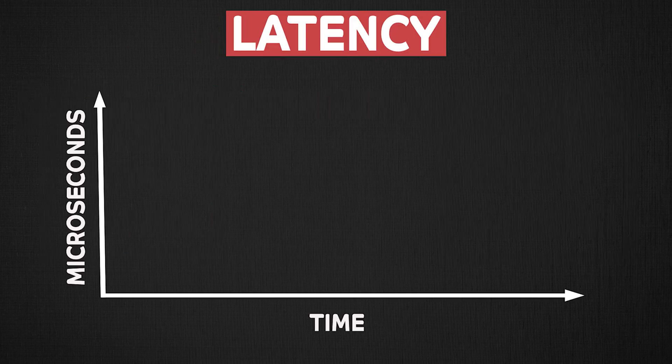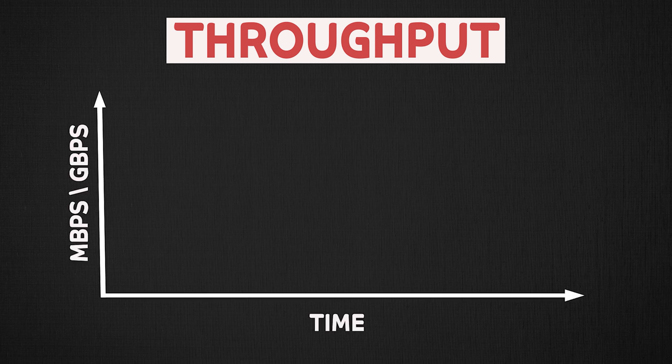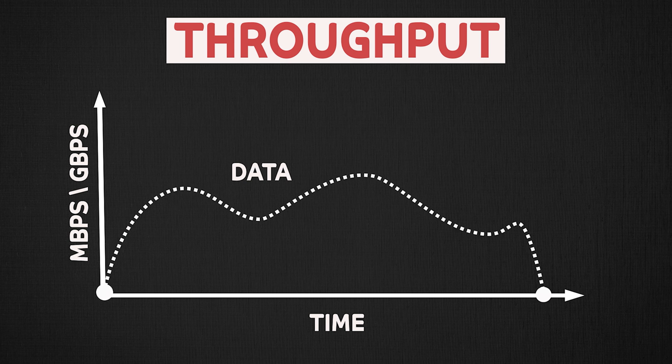Latency is how long it takes for data to go from one point of a system to another. Throughput is how much work a computer can perform in a given amount of time. An example is how much data can be transferred from one point of your system to another, and this might be measured in MBPS — megabits per second — or GBPS — gigabits per second.